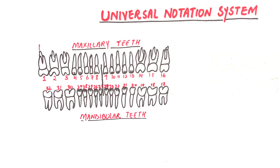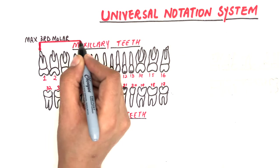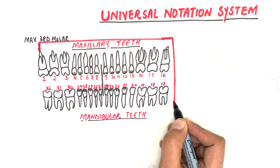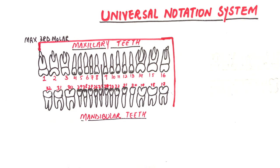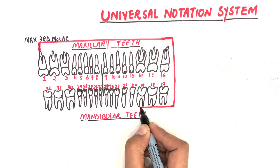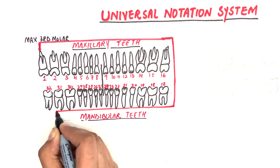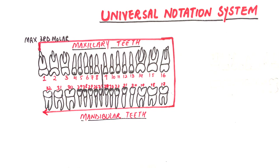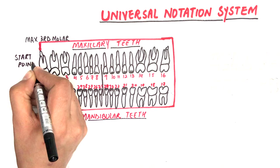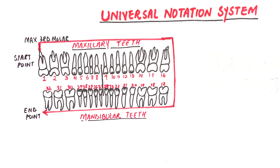We begin with the maxillary arch starting from the maxillary right third molar, move along the same arch, then jump to the lower arch starting from the side we ended in the upper arch, and move back towards the right, finally ending at the lower right mandibular third molar. In short, the start point in this system is the maxillary right side and the end point is the mandibular right side.